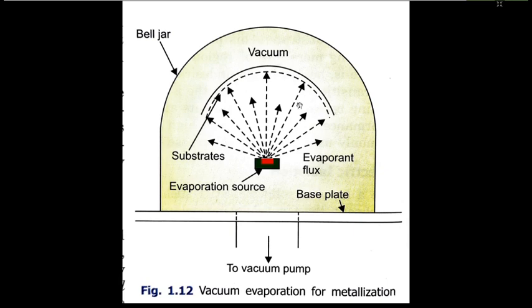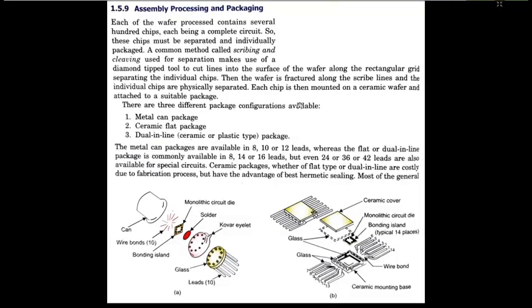The question is why is vacuum necessary? Because the source of your metal vapor, whether silver or aluminum, can easily and uniformly reach the IC chip or wafer. The vacuum level is 10 to the power minus 6 to minus 7 torr.